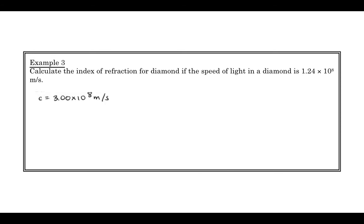So we know the speed of light, 3.00 times 10 to the eighth. We know the speed of light in diamond. And we know that n is equal to c over v. So a quick calculation gives us that n is equal to 2.42, which really does represent a very, very optically dense object. So this is one of the most optically dense objects.